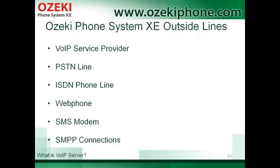Azaki Phone System XE can manage many types of external lines. You can connect your phone system to a VoIP service provider, a PSTN line, or an ISDN phone line as well. This means that you can call not only IP phones but also traditional phones, and you can receive calls from traditional phones as well.